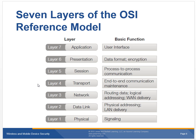Here are our layers: application, presentation, session, transport, network, data link, and physical. Reading from the top: 'all people seem to need data processing,' or 'programmers do not throw sausage pizza away' — those are easy ways to remember the different names. This is used today but is now called the TCP reference model, and I can probably find you a picture of it.